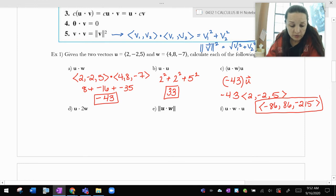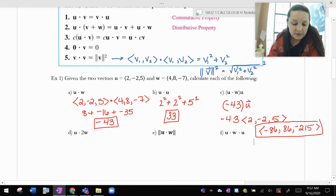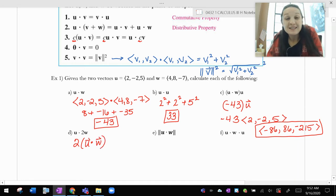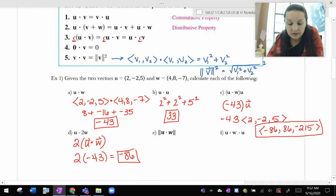u dot 2w. Well, I'm going to use one of the properties up here that says if I have a constant sticking around, I can really multiply that by anything I want. I can multiply it at the end. I can multiply it before. So it's totally up to me. I'm going to think of this as 2 times u dot w because it said I can. And I already know u dot w. It's right above it. So this is going to be 2 times negative 43, which is negative 86.